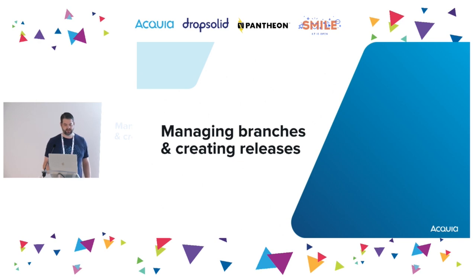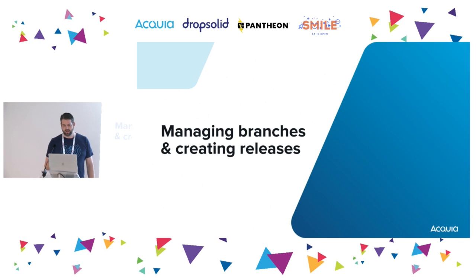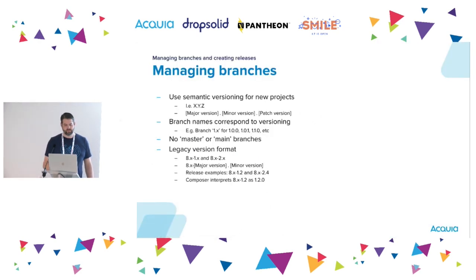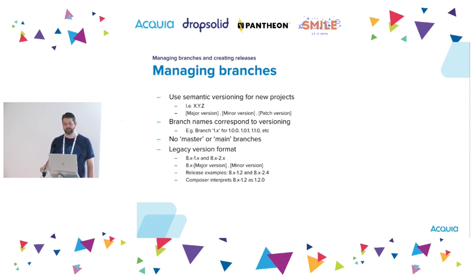Now we're going to talk about managing branches and creating releases. Drupal.org leverages GitLab for hosting all its repositories. For Drupal projects, you'll use semantic versioning — x.y.z. The convention used by the Drupal community is for branch names to correspond with release versioning. So for example, a branch named 1.x could be used for releases 1.0.0, 1.0.1, 1.1.0, and so on. In Drupal and the contrib space, there's really no concept of a master or main branch — it'll be semantic versioning like 1.x. The 1.0.x format is also supported.